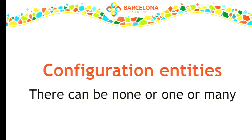The other type of configuration is configuration entities. These are things where there can be none on your site, there can be many, or there can be one — but that is just an instance of many. Things that are configuration entities in Drupal 8 are your node types, fields, vocabularies, filter formats, and views. These are the things that you build during your site build and want to deploy.